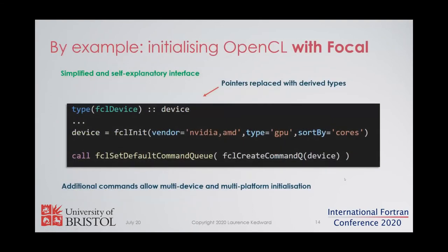This is the equivalent process using the Focal library, where we can achieve the same thing with only a couple of lines of code that are designed to be concise but also very explicit. Here we're initializing OpenCL by selecting a GPU device on the current machine that belongs to either of these two vendors, choosing the device with the most computational cores. Then with that device we create a command queue, which we use to enqueue work for the device. There are also options for multi-device and multi-platform setups.